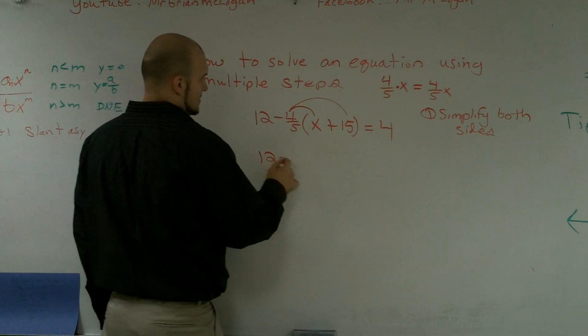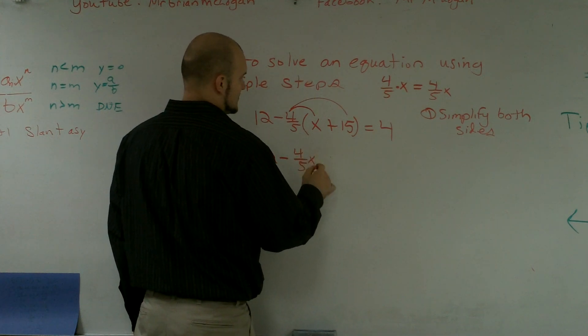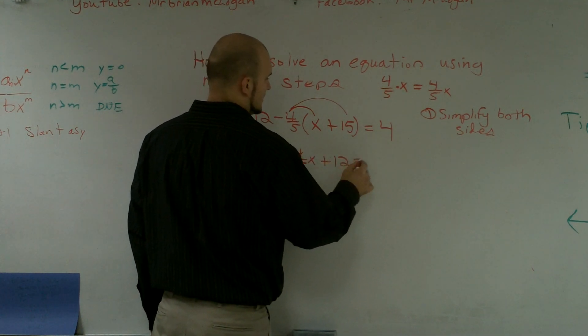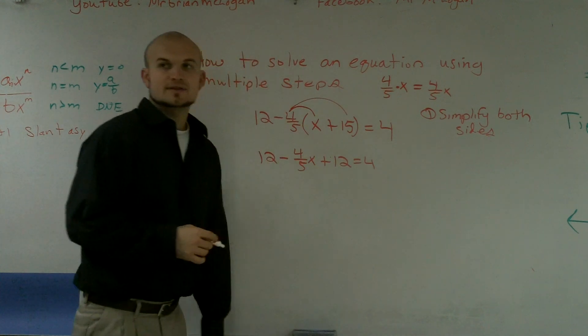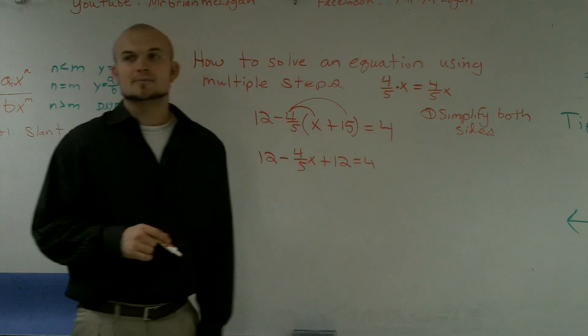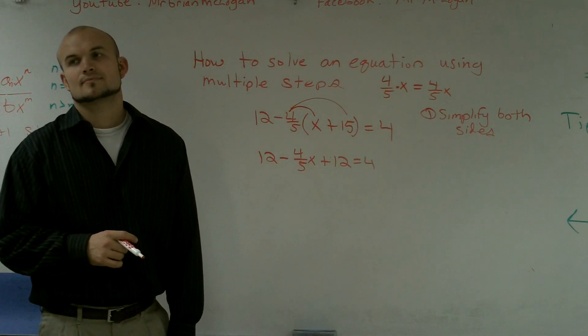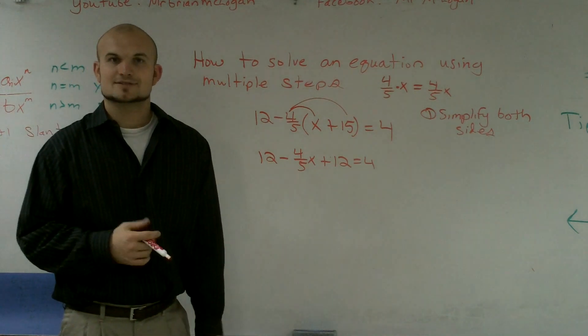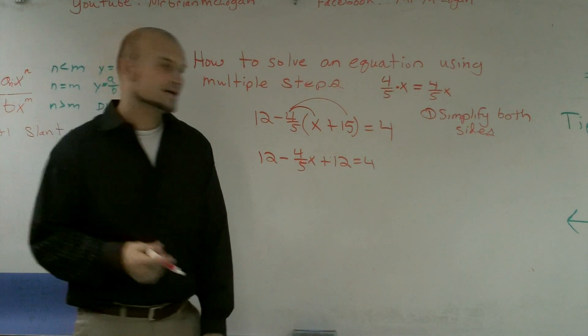So I get 12 minus 4/5 x plus 12 equals 4. The next step after I've simplified them.